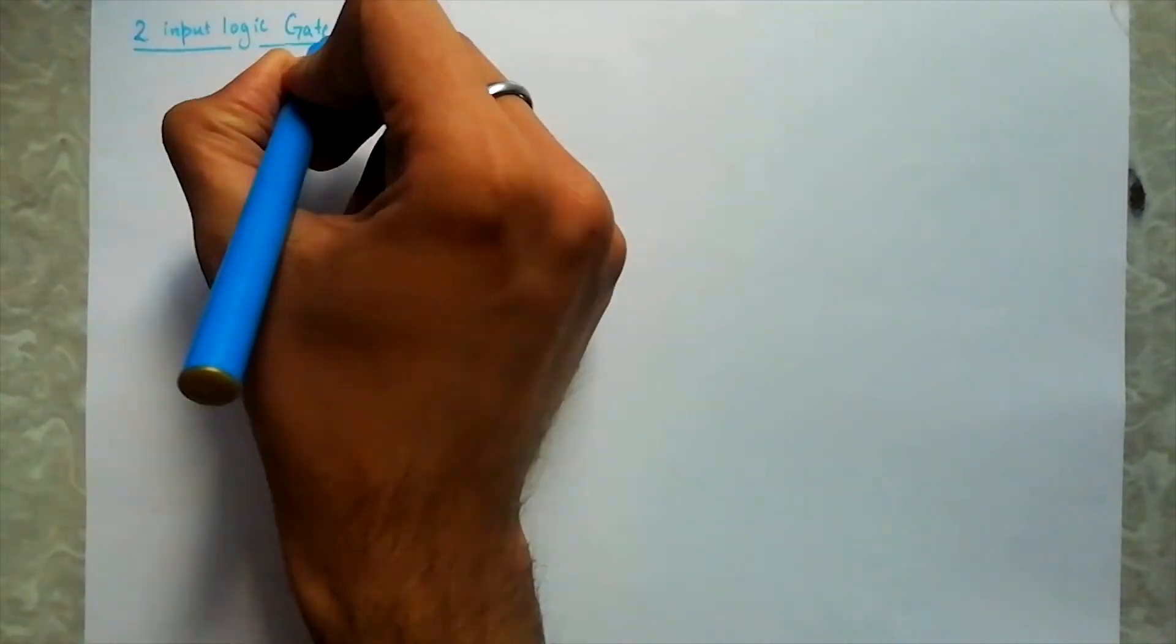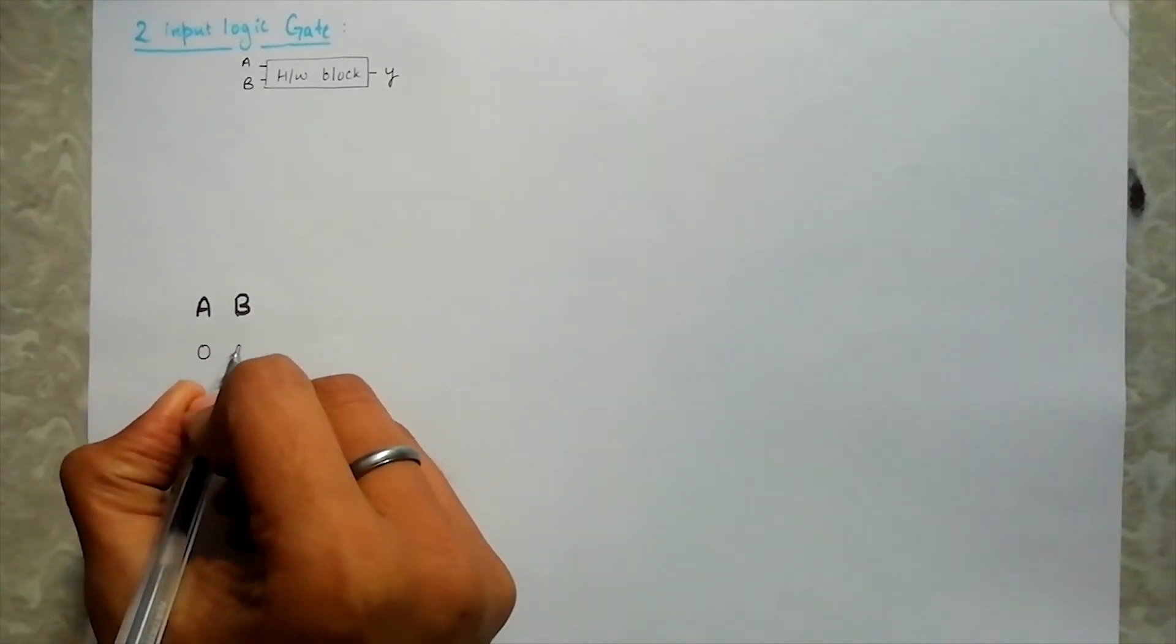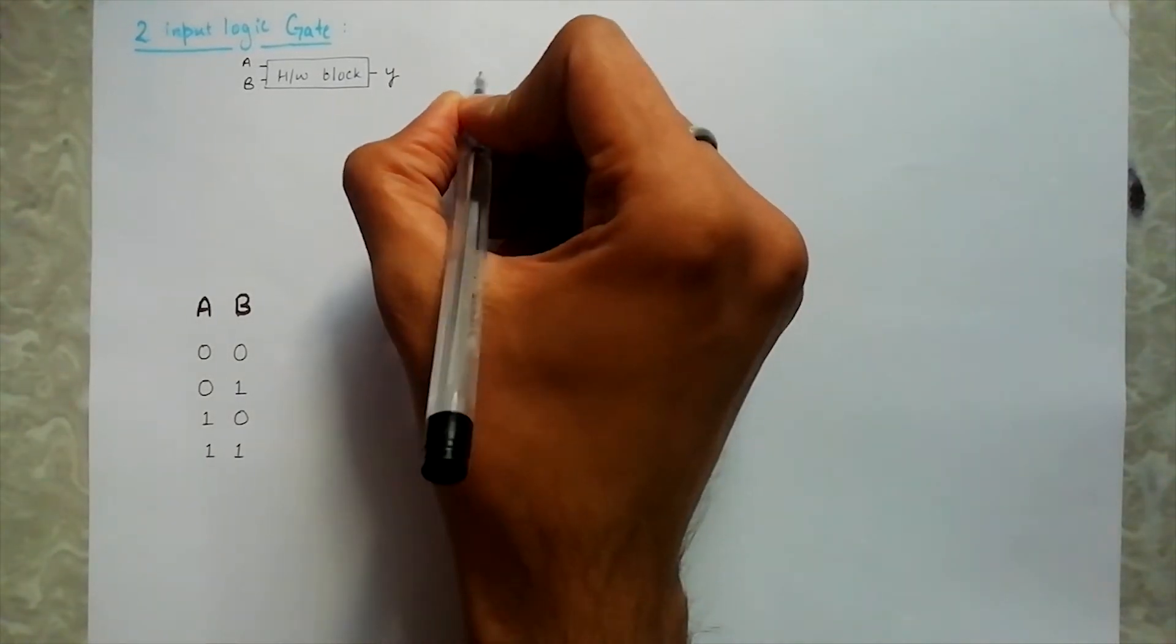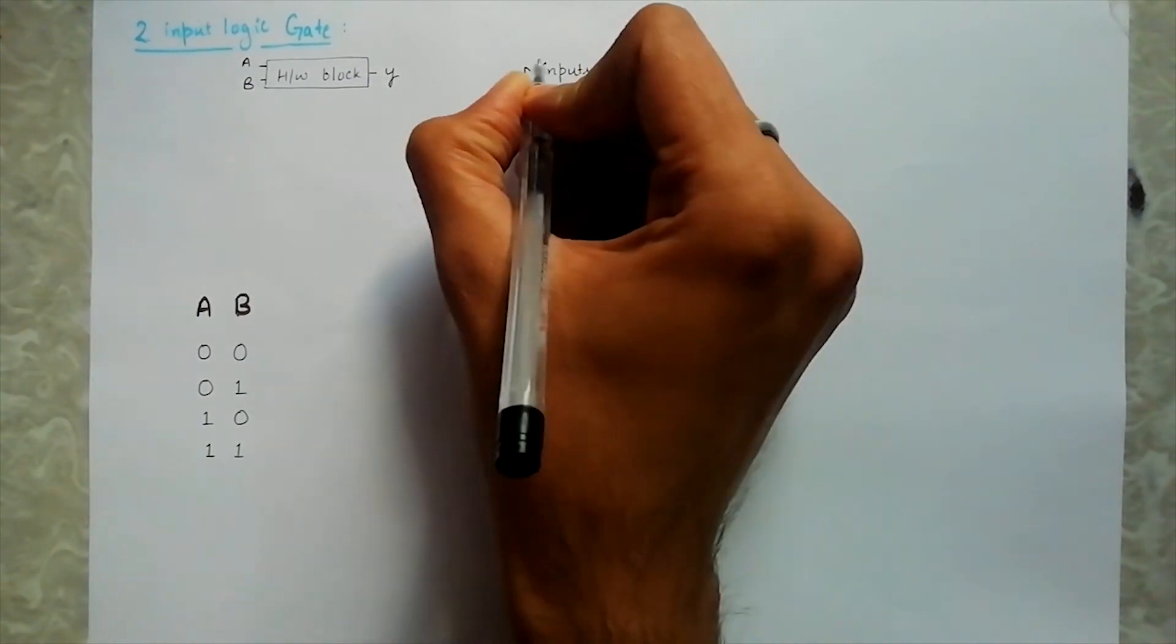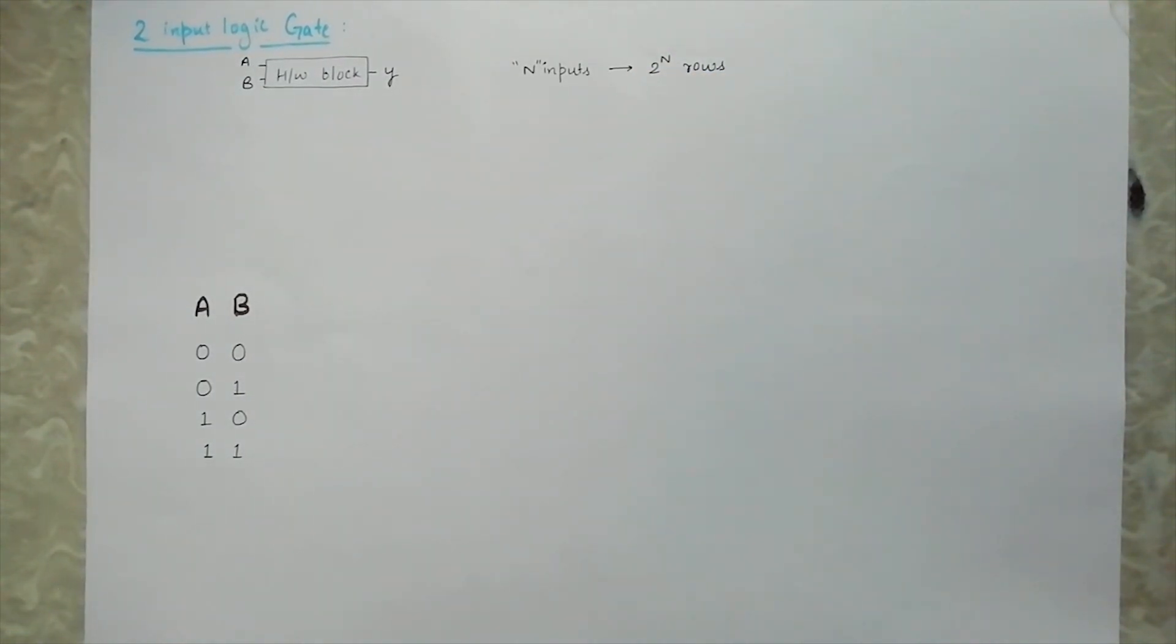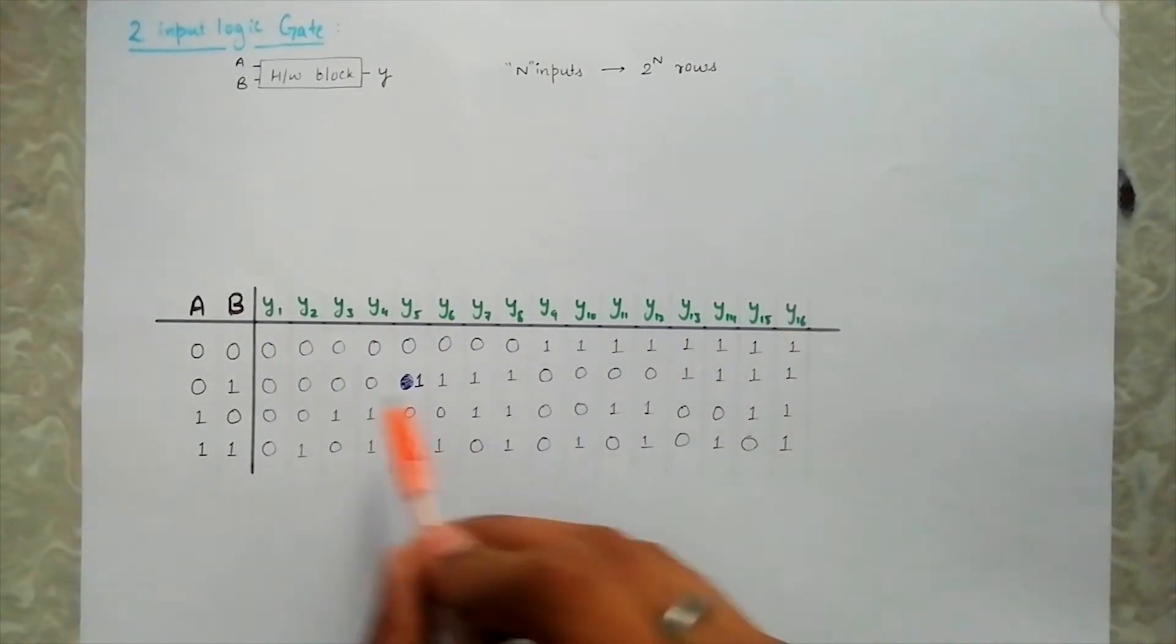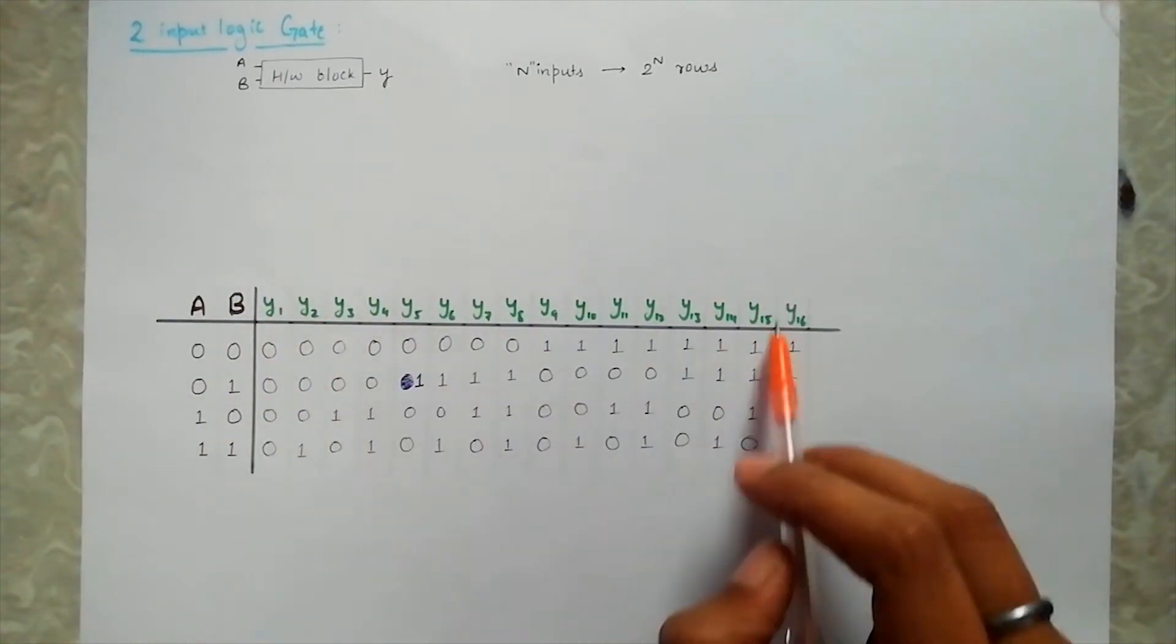Let's now move on to two input logic gates. We have two binary inputs A and B and an output Y for the hardware block. A and B can both be 0 or 1 leading to four unique combinations: 0 0, 0 1, 1 0 and 1 1. Generally speaking, if we have n inputs, there will be 2 to power n combinations and hence 2 to power n rows in the truth table. Similar to a single input case, Y can take values of 0 or 1 corresponding to each of the possible inputs. This leads to 16 possible unique outputs. Our hardware block with two inputs can represent any of the following 16 possibilities depending on the requirement. I have numbered the outputs from 1 to 16. This gives us an exhaustive list of possible values Y could take for a two input hardware block. Let's look at them.